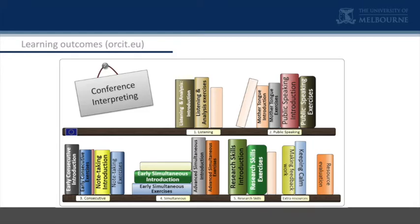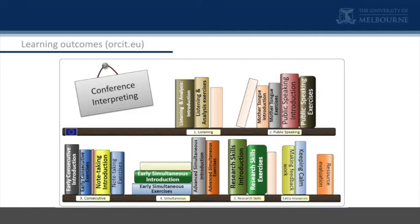The problem is it's basically between European languages, and someone could do worse than adapt this to English-Chinese. I just want to show the way it's broken up. The first module is listening and public speaking — you learn how to listen, you learn how to speak. Then consecutive, simultaneous, the research skills I mentioned, and a few extras: resource evaluation, keeping calm — in big letters — and making feedback work, which is really how to learn to learn and how to accept feedback without getting too upset by it.